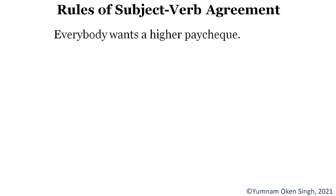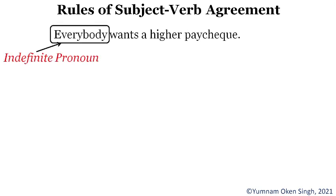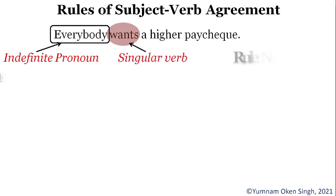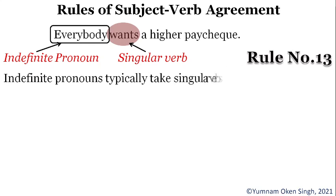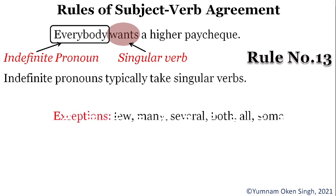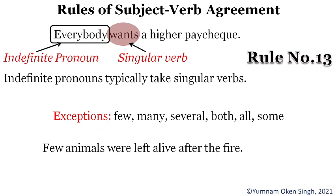Rule Thirteen: 'Everybody wants a higher paycheck.' Indefinite pronouns like 'everybody' take singular verbs. However, exceptions include indefinite pronouns like 'few,' 'many,' 'several,' 'both,' 'all,' and 'some' — these always take plural verbs. For example, 'few animals' takes a plural verb. This is Rule Number Thirteen.